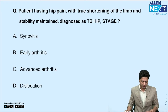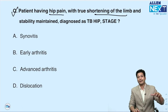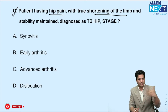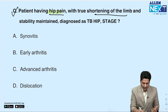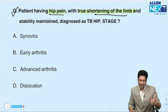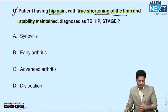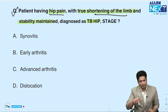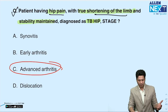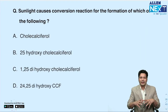A patient with hip pain and true shortening of the limb with maintained stability (no subluxation or dislocation): this represents the stage of advanced arthritis in tuberculosis of the hip joint. This question was asked in the FMG examination last year.